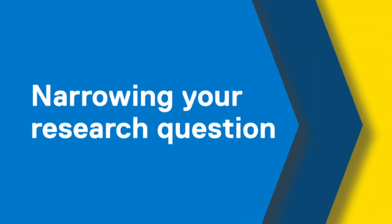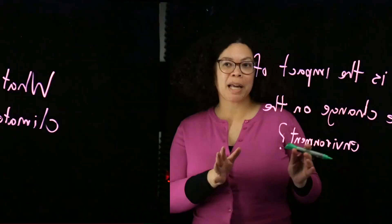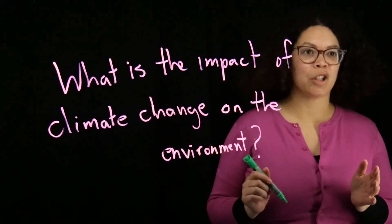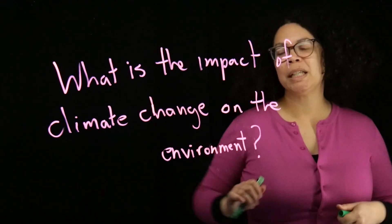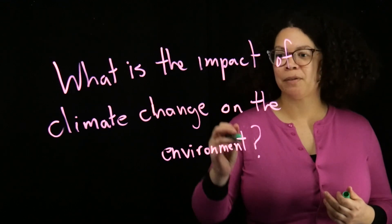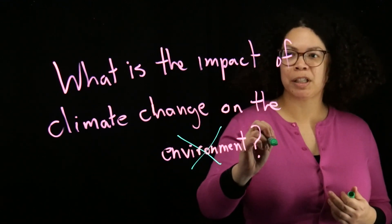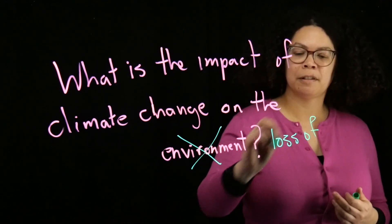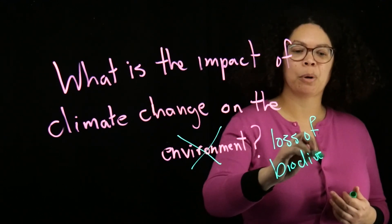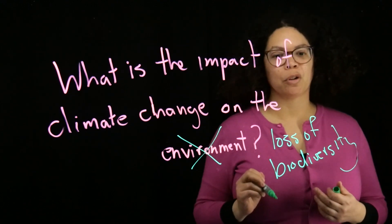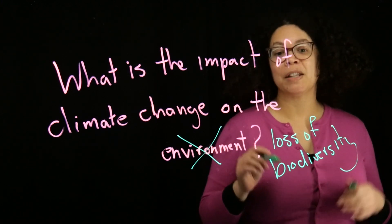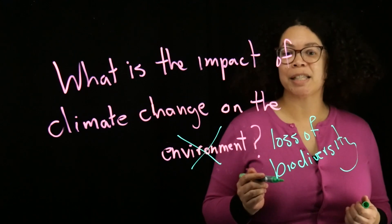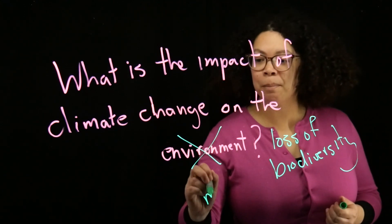Now I'm going to talk about how we can move from a broad question to a series of even narrower questions. Here we have our broad question: what is the impact of climate change on the environment? We know this is too big a question to research. We know that we might want to look specifically at the loss of biodiversity — already this is a narrower question than just looking at the environment overall. We can get even more specific by specifying the type of biodiversity, for example, the loss of marine biodiversity.